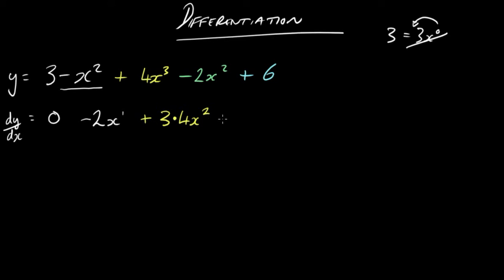Then we've got a minus sign. So it's minus 2. We brought the power down in front. Minus 2 lots of the other 2, x to the power of 1. And plus 6 is a constant. So it's just 0. So you don't even bother adding it.